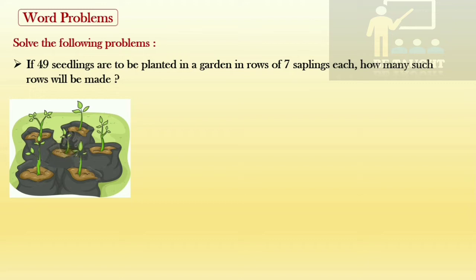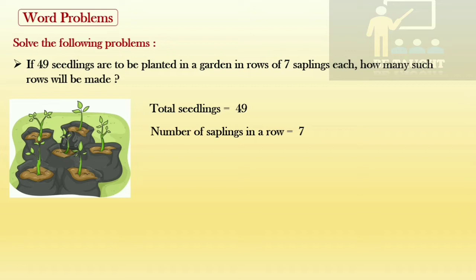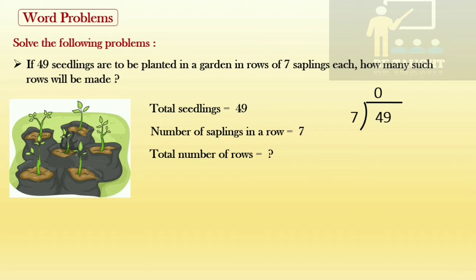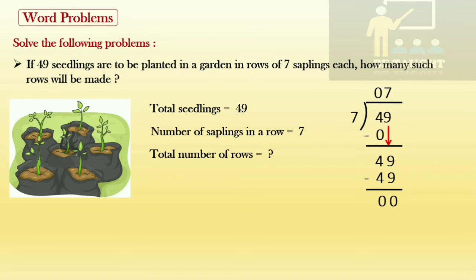Word problem: If 49 seedlings are to be planted in a garden in rows of seven saplings each, how many such rows will be made? We write the statements — total seedlings = 49, number of saplings in a row = 7, and total number of rows is what we have to find. We arrange it vertically: 49 divided by 7. Taking one digit at a time, seven zeros are 0, 4 minus 0 is 4, bring the 9 down. Seven sevens are 49; 9 minus 9 is 0 and 4 minus 4 is 0. Our quotient is our final answer when remainder is zero.